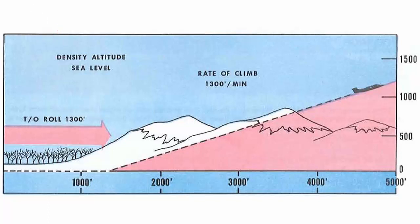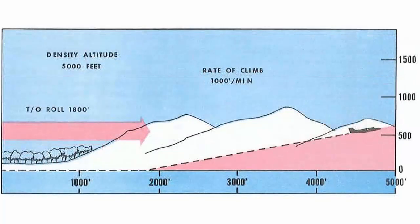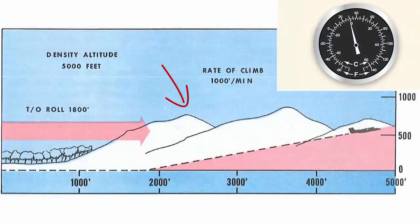Regardless of the actual altitude at which the aircraft is operating, it will perform as though it were operating at an altitude equal to the existing density altitude. The conditions that result in a high density altitude are high elevations, low atmospheric pressures, high temperatures, high humidity, or some combination of these factors.